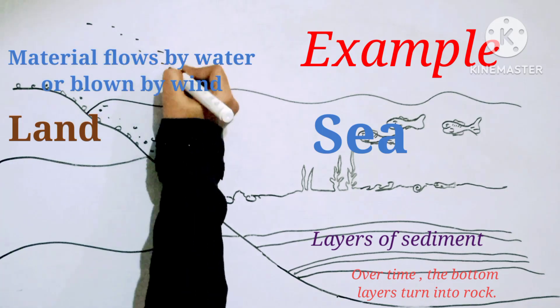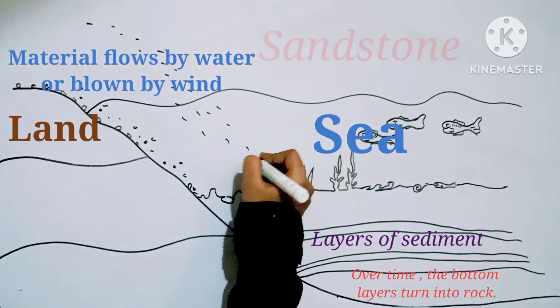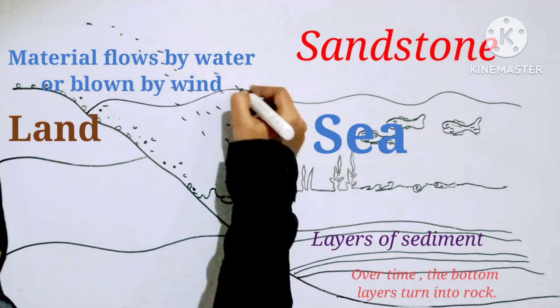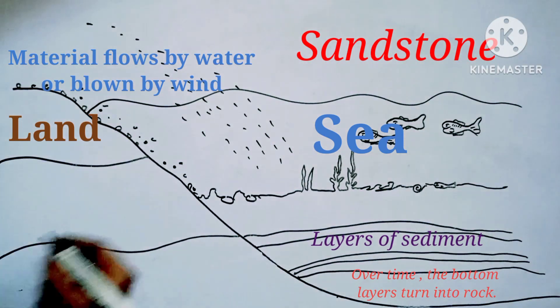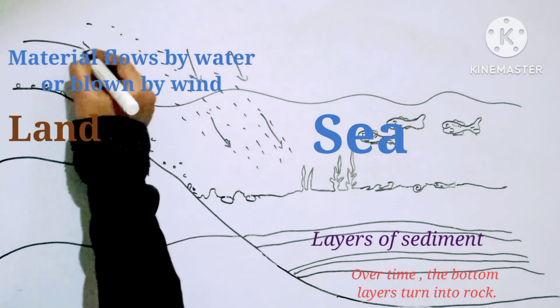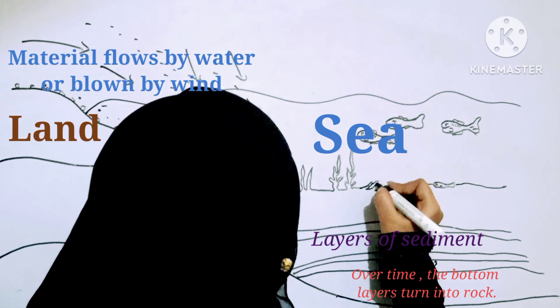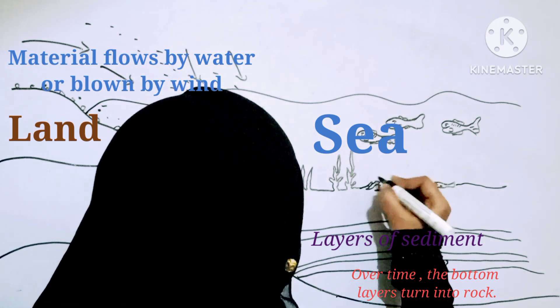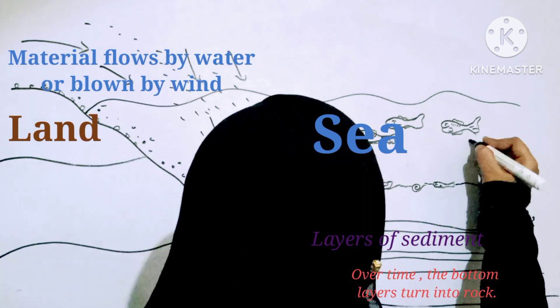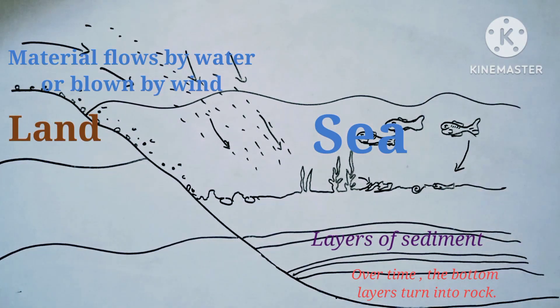Let us see examples of sedimentary rocks. The first example is sandstone. It is formed when small particles of sand get compressed and cemented together on land or underwater. It can be brown, pink, red, or yellow in color. These rocks are used in the construction of buildings. For example, Lal Kila in Delhi is made up of sandstone.